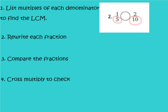Go ahead and do this with me in your GoMath books. We need the multiples of 5 and the multiples of 10. Multiples of 5 are 5, 10, 15, and 20. Multiples of 10 are 10, 20, and let's do one more — 30. Our goal is to find the least common multiple, which would be 10.